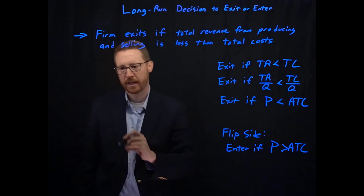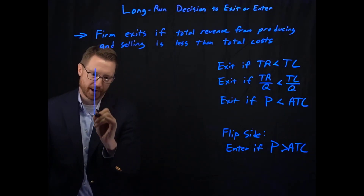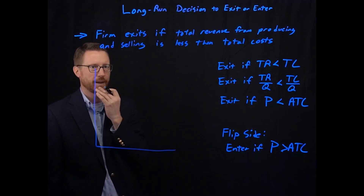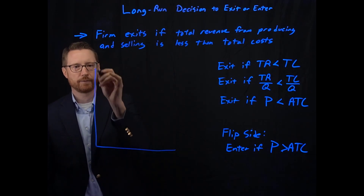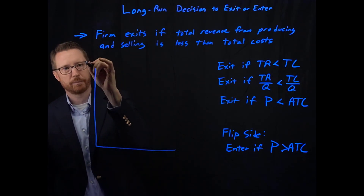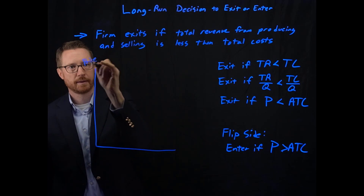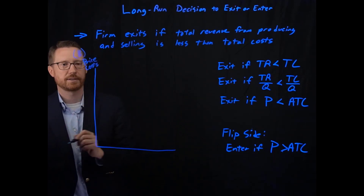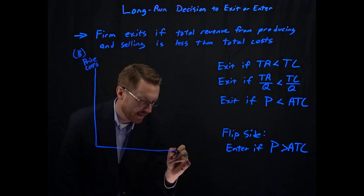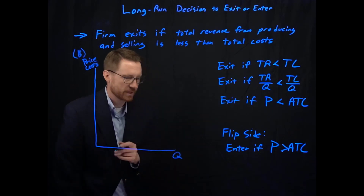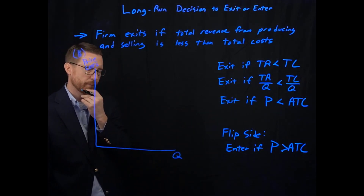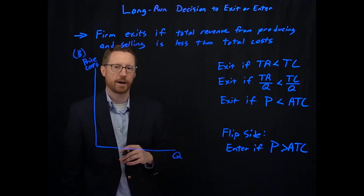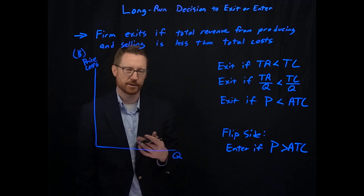Let's set up a diagram — draw it fairly big because we're going to make a bit of a mess of it. On our vertical axis we're going to put price and cost — the dollar variables. We compare that to quantity on our horizontal axis, which we'll call Q.